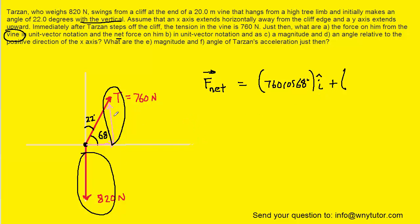Now because the upward tension force is pointing upward it is going to be positive, and remember that it was 760 times the sine of 68 degrees. And then we have the downward gravitational force so we have to subtract the 820 newtons.